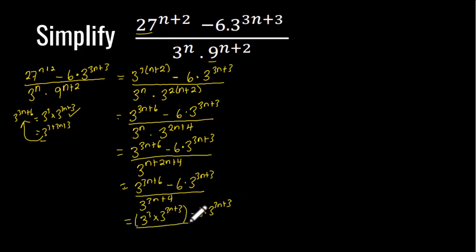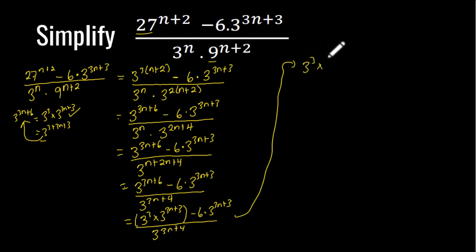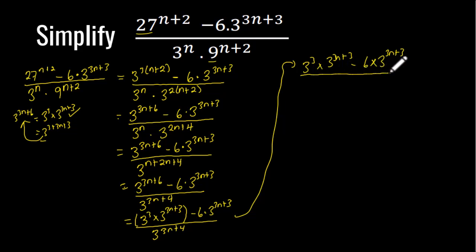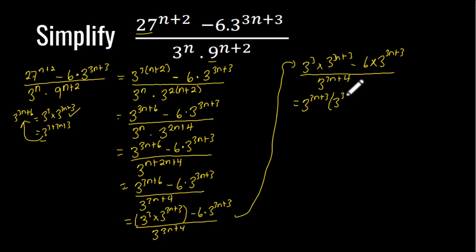We can see that 3 exponent (3n+3) is a common factor in the numerator. Factorizing it out, we get 3 exponent (3n+3) times (3 exponent 3 minus 6), all divided by 3 exponent (3n+4).